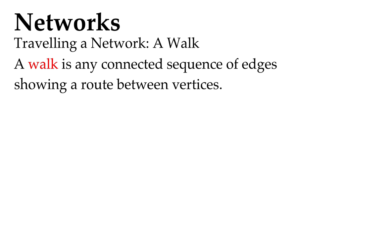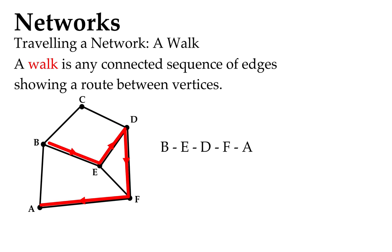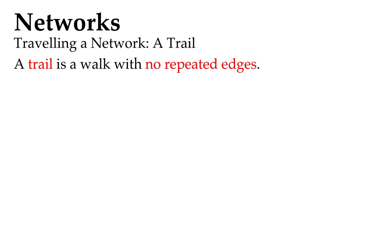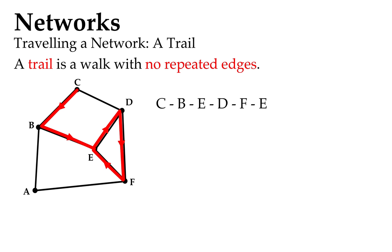Travelling a network you've got all different sorts of things. A walk is the general overall term for getting from one place to another, any connected sequence of edges without any restrictions between vertices. Now when we get more specific with various restrictions or extra conditions on it, we change the name. A trail is a walk with no repeated edges. So here's an example: we didn't repeat any edges, we did repeat one of the vertices but that doesn't matter for a trail. It only worries about not repeating any edges.